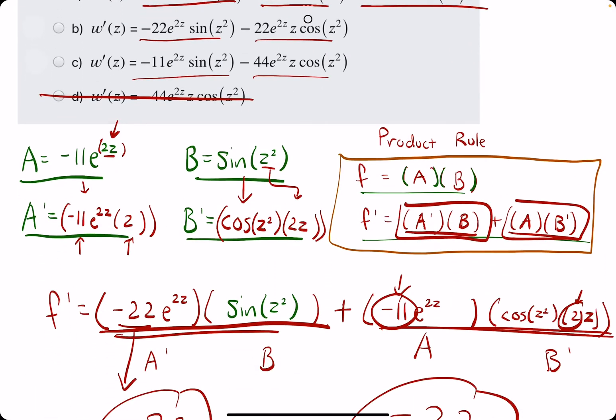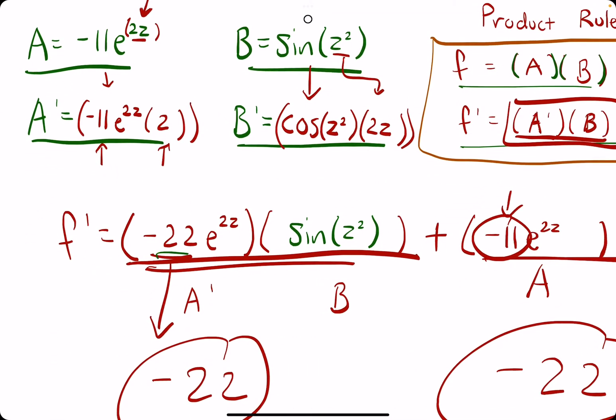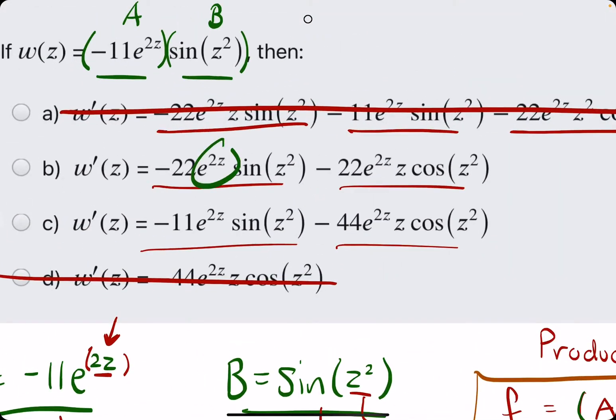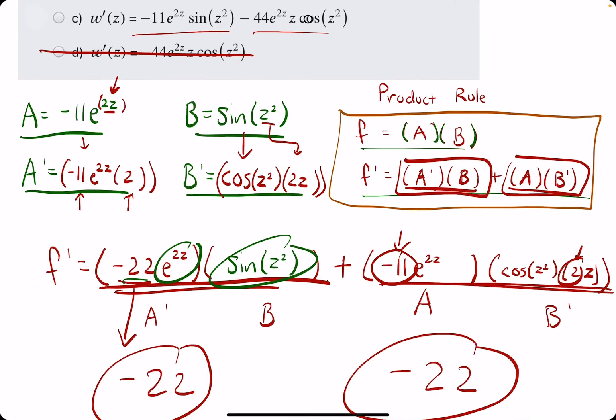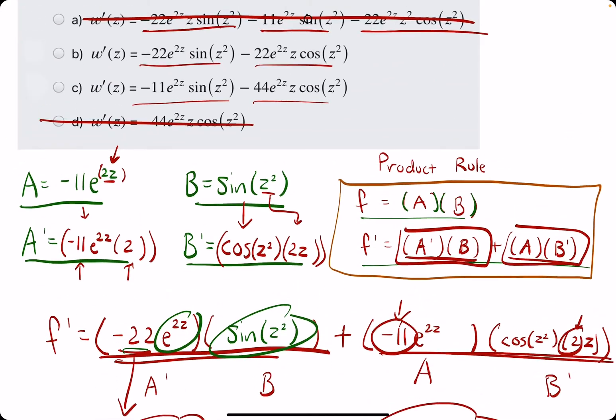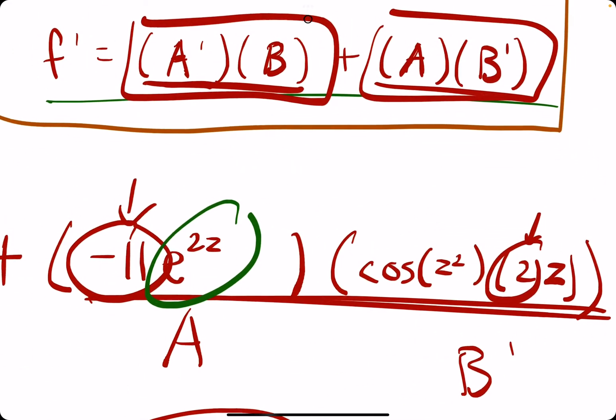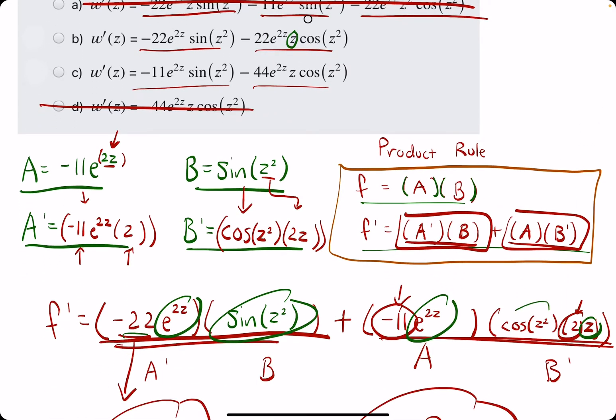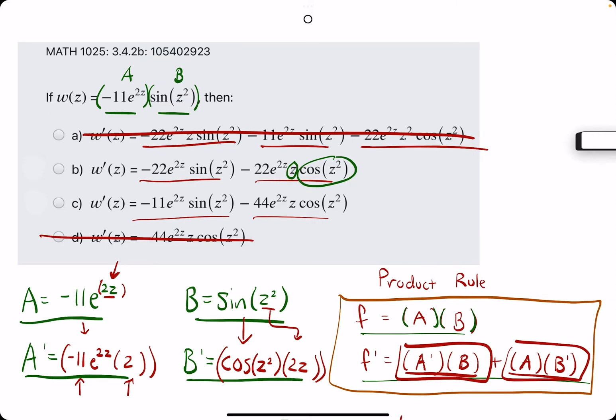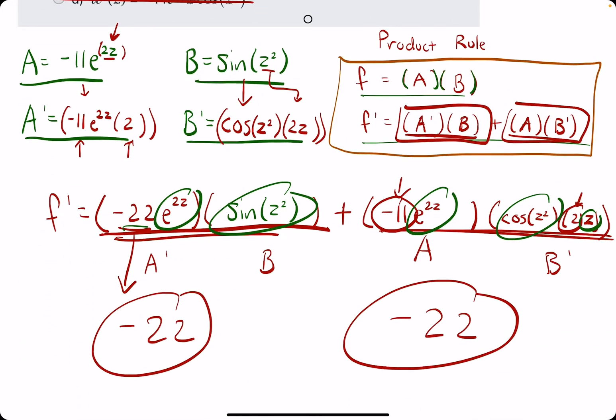And then, of course, we could verify that all the other terms match. We have negative 22, we have an e to the 2z, and a sine of z squared. So, first term looks good. And then, the second term, we have the negative 22, we have the e to the 2z, we have a z, which matches this z. And then, of course, the cosine of z squared is here. So, again, the coefficients can help you find your answer. But, of course, it might be helpful to confirm that all the other terms are there.